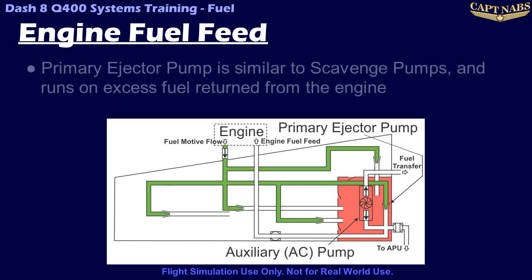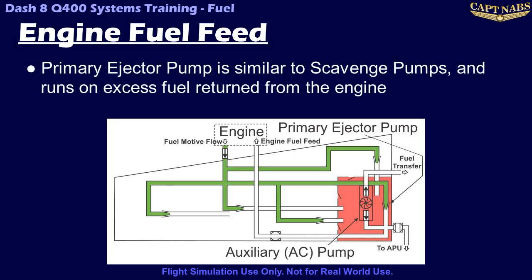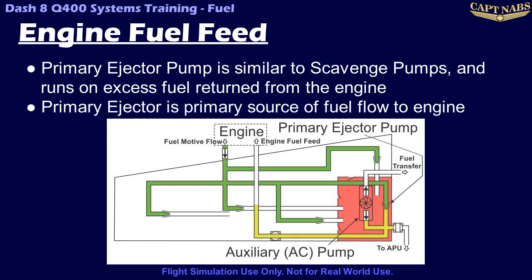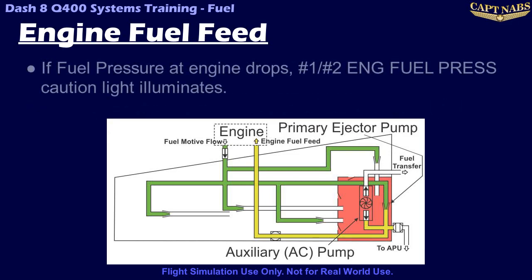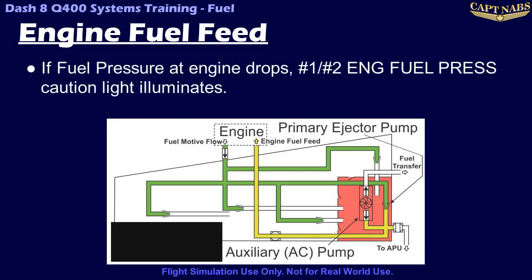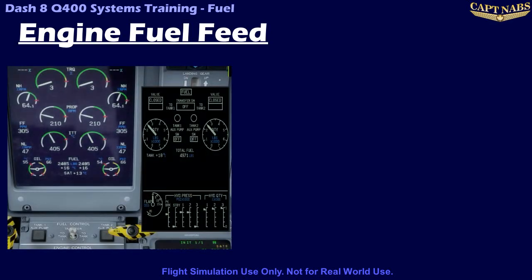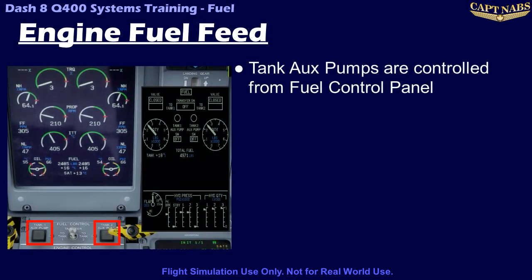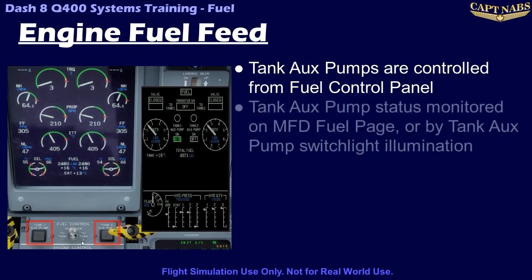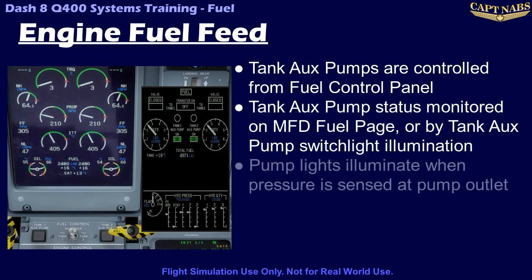Like the scavenge ejector pumps, the primary ejector pump is powered by motive fuel flow returned from the engine. The primary ejector pump is the normal source of fuel pressure for the engine, with the electric fuel pump serving as a backup system for takeoff, landing, and in case of a failure of the primary ejector pump. If the pressure at the inlet of the engine-driven fuel pump drops below the required limits, this will illuminate the number one or number two engine fuel press caution light. Each tank aux pump is powered by AC electric power and is controlled by a switch light on the fuel control panel. The status of the tank aux pumps can be verified on the fuel page of the MFD or by the illumination of the tank aux pump switch light.